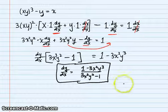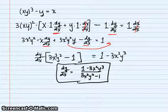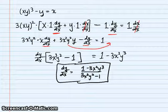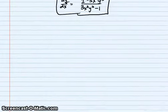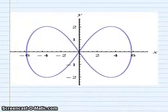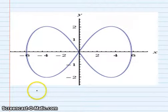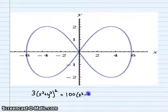Since we've defined our function implicitly, it's not a big deal if we have both x's and y's in the derivative. So we'll just leave our derivative like that. Let's try one more that's a little bit harder, and hopefully this one will help us remember why we do these in the first place. Here's the function: 3 times (x² plus y²) all squared equals 100 times (x² minus y²).